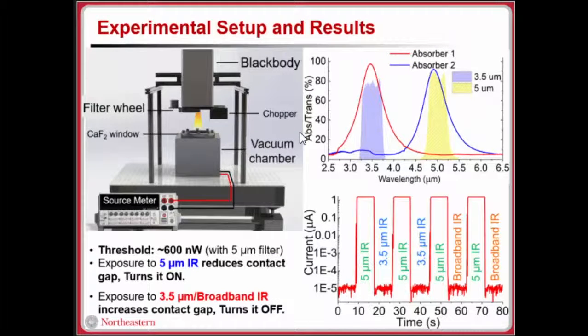To test this technique, we have a black body based setup where we keep the black body on top of a vacuum chamber where we keep the device. We insert filters in between the broadband black body source to simulate narrow band infrared radiation. For this we used two different filters, 3.5 micron matching the absorber on the left and 5 micron to match the absorber on the right, which is the targeted radiation.